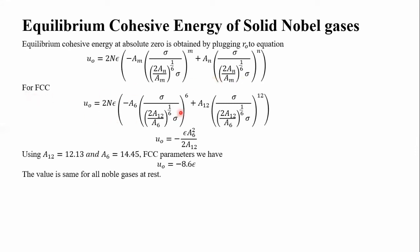We know that M is given as 6, A₆ is 6; N is 12, A₁₂ is 12. These values are 6 and 12. A₁₂ is 12.113 for FCC, and A₆ is 14.45 for FCC. These two parameters are known values.